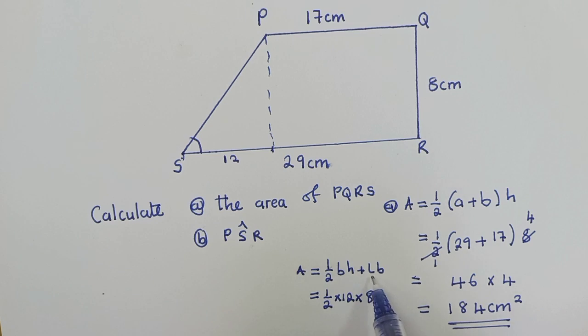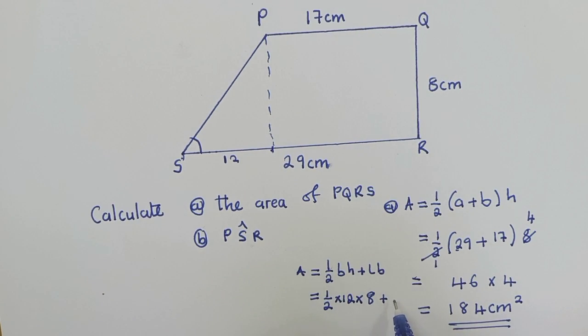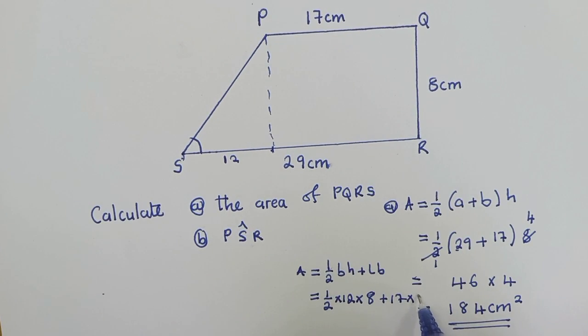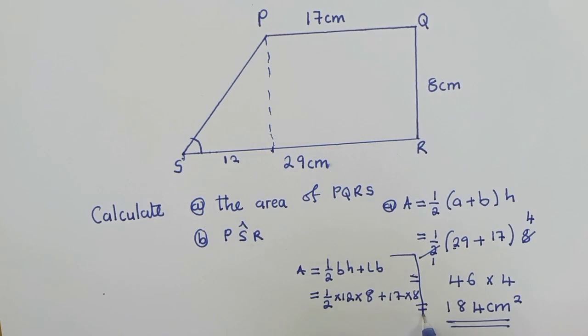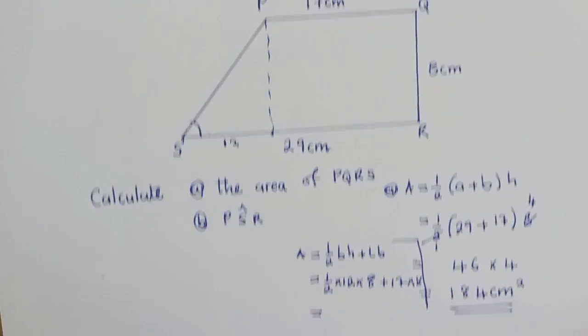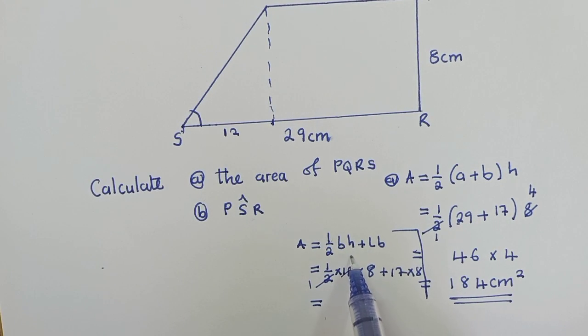So our B will just be 12 times our H. It's from here to here, which is 8, this 8 which has been given here. And then we say plus L. L now will be from here to here, which is 17 times from here to here, which is the height, that is our 8. So let me cut here so that you see what is happening.